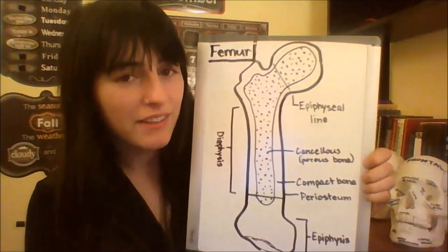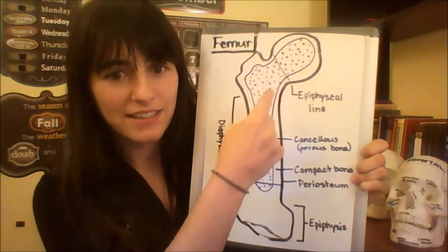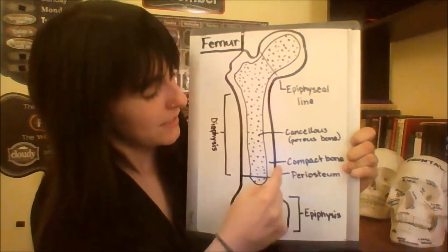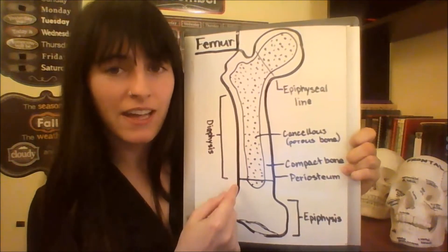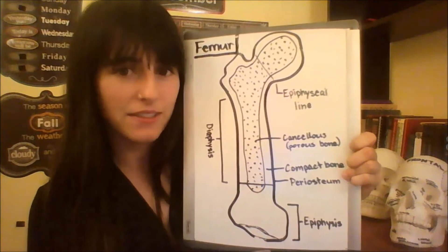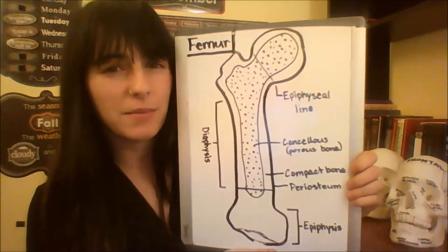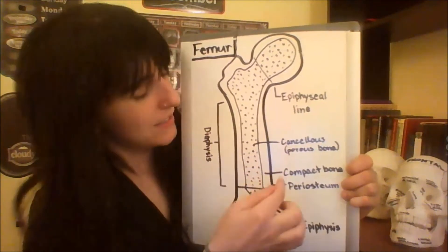Bones also store 99% of the body's calcium. A typical long bone, like the femur, has a main shaft known as the diaphysis — this is the longer portion of the bone — and an end referred to as the epiphysis. The periosteum is like a tough membrane that surrounds the bone.